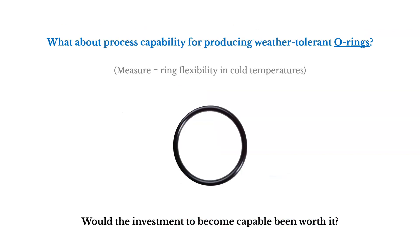Here's another example: process capability for producing weather-tolerant O-rings. O-rings are used for insulation, and on the Space Shuttle Challenger, one of the reasons for the explosion was these O-rings — they weren't weather-tolerant and didn't respond well in cold temperatures. As we assess our capability of producing weather-tolerant O-rings, one measure we might use is ring flexibility in cold temperatures.